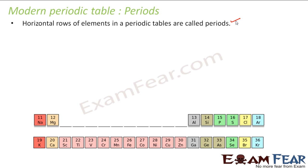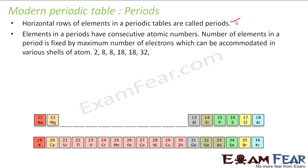And there are some properties of periods. For example, every period has a consecutive atomic number. For example, this is 11, this guy is 12, this guy is 13, 14, 15 like this. So the elements in this period will have consecutive atomic numbers. Also, the number of elements in the period is fixed by the maximum number of electrons which can be accommodated in the valence shell.